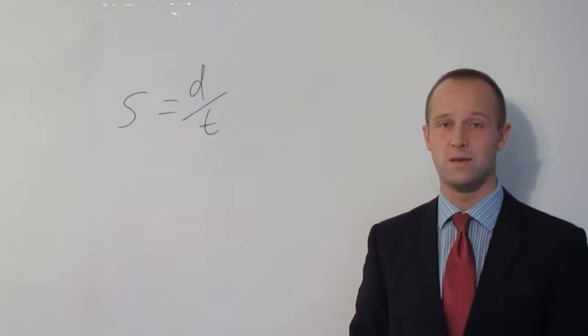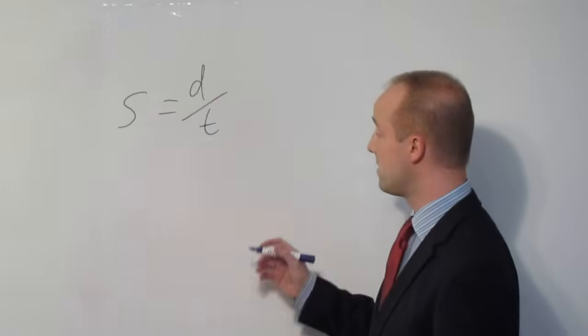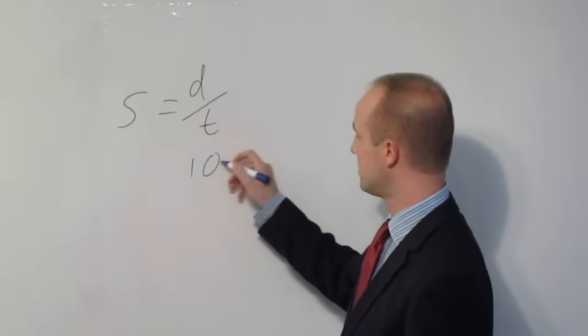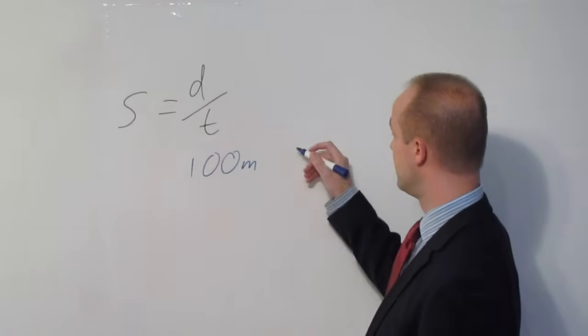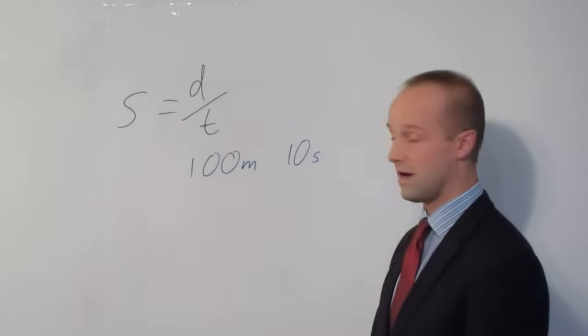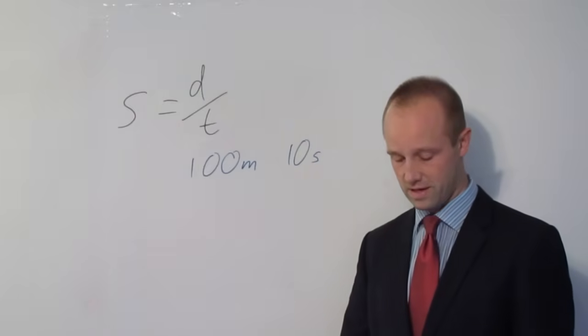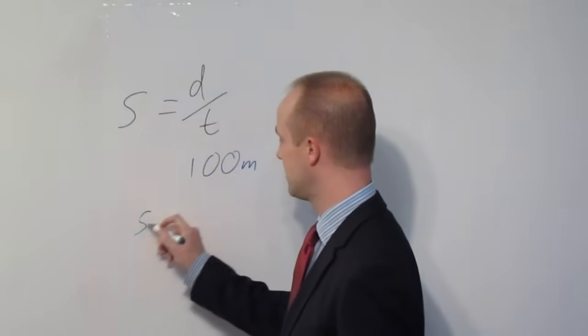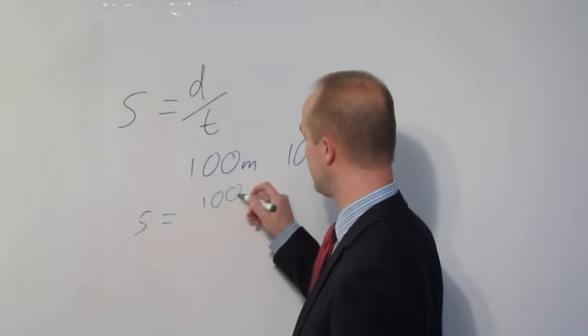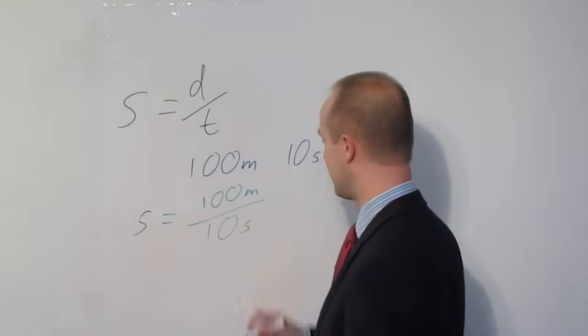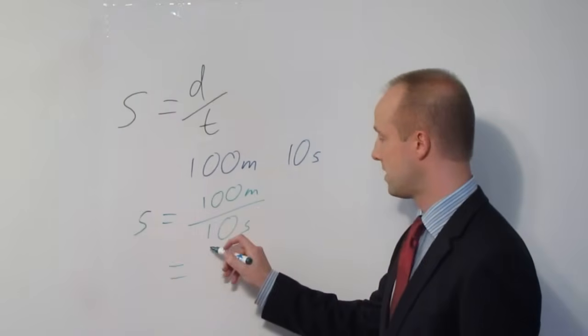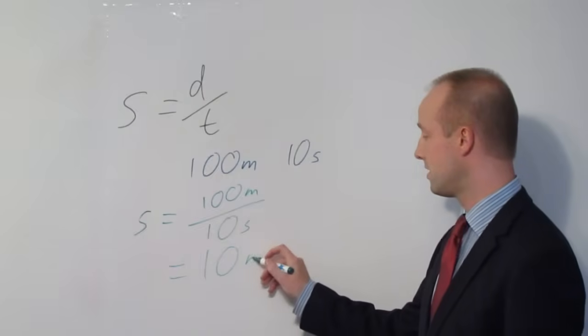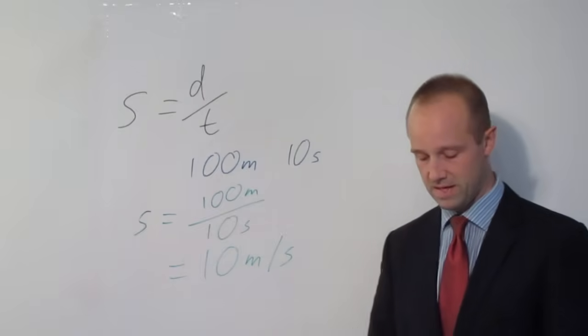So let's have a look at a very simple example. Let's say we've got someone who is a 100-meter sprinter. They're running 100 meters and they've taken 10 seconds to do that. The calculation couldn't really be much simpler. Their speed equals 100 meters divided by 10 seconds, which comes out to 10, and the units are meters per second.